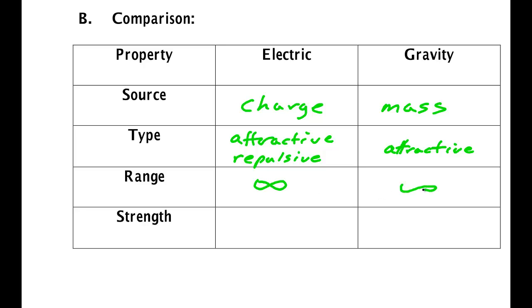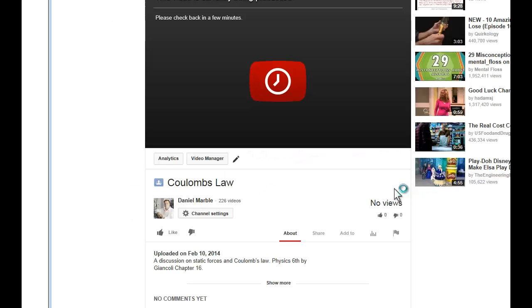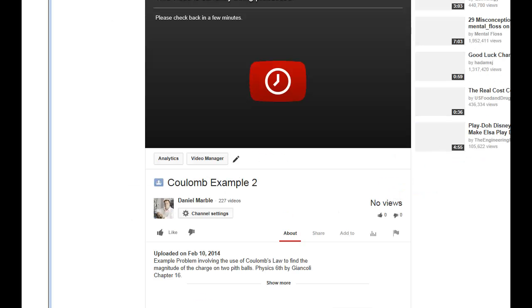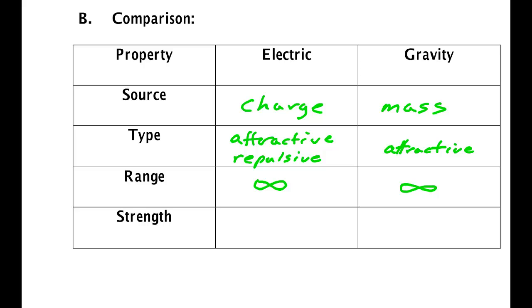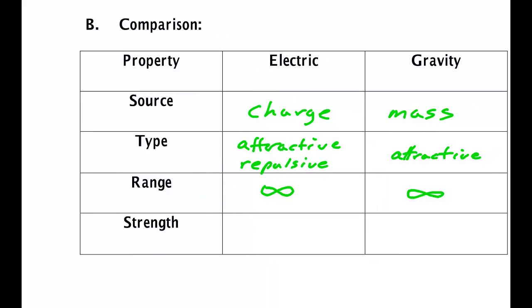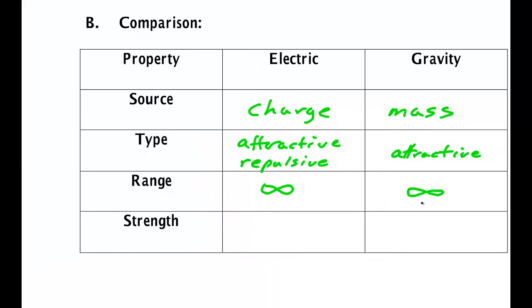Electric fields and gravity are both infinite in range. In modern physics this tells us that the object that carries this force must be a particle that has no rest mass. The photon carries the electric force, and the graviton carries gravity — both are massless particles.